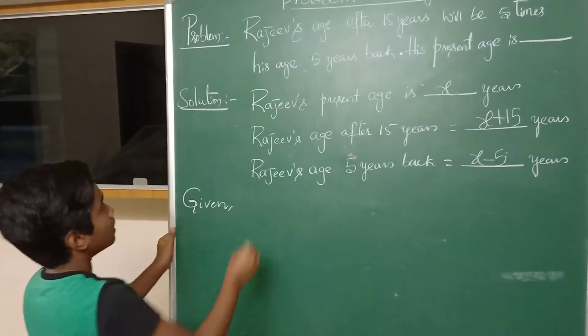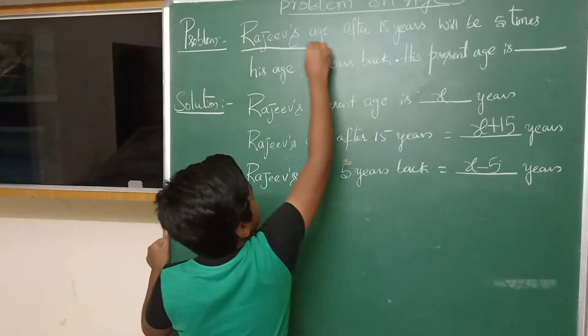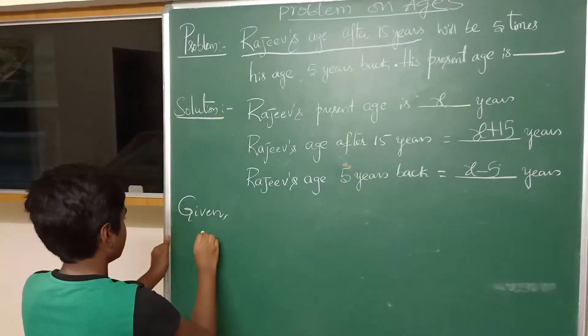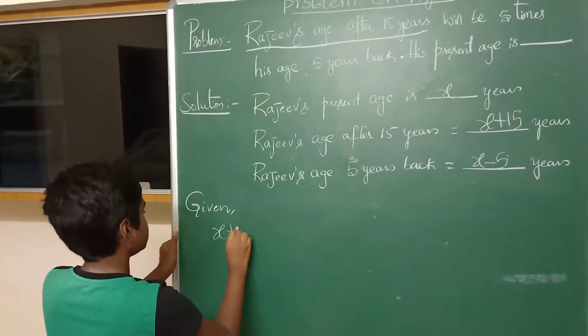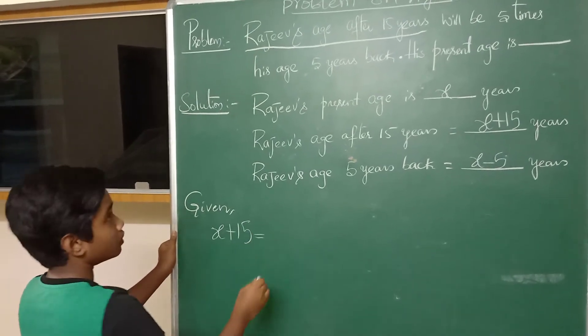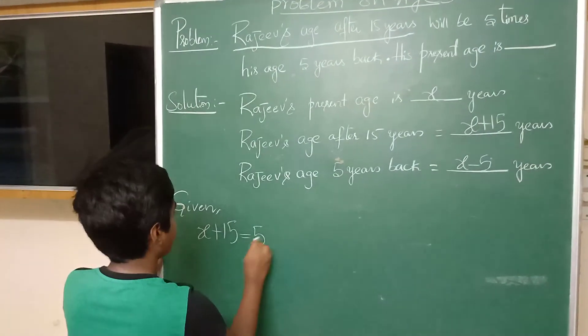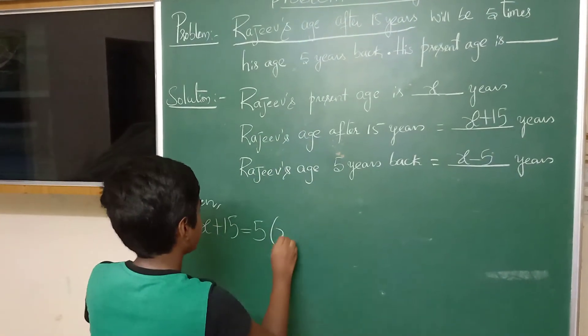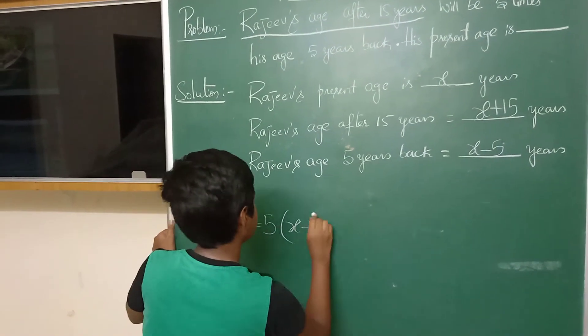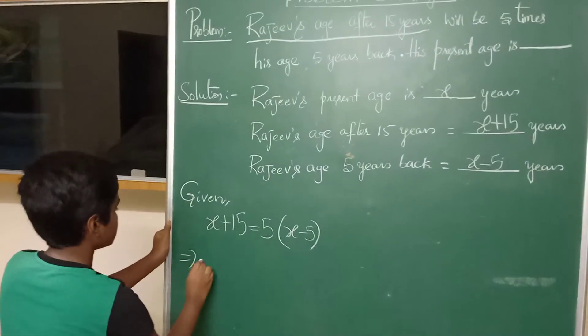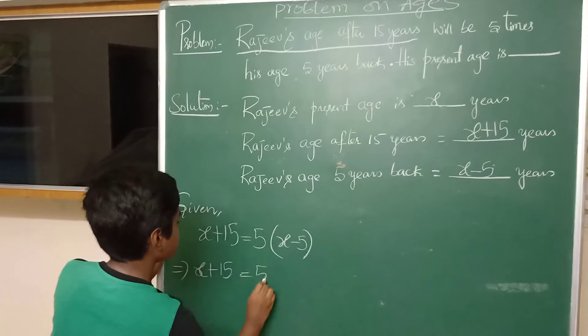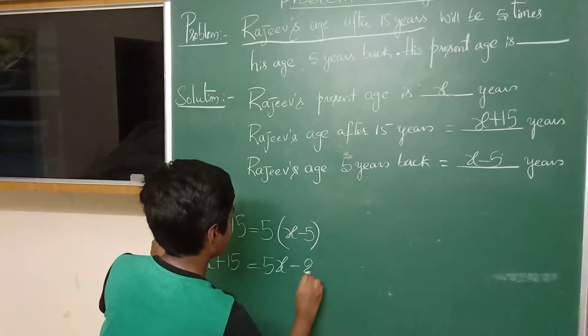Given Rajiv's age after 15 years, X plus 15, will be equal to 5 times his age 5 years back, which is X minus 5. This gives us X plus 15 equals 5 times X minus 5, which simplifies to X plus 15 equals 5X minus 25.